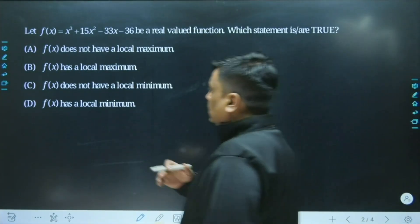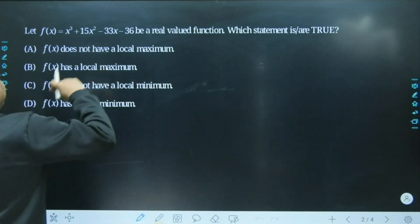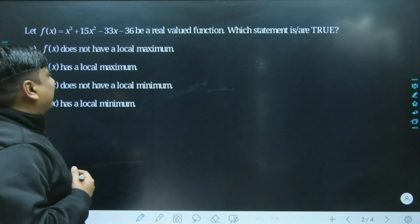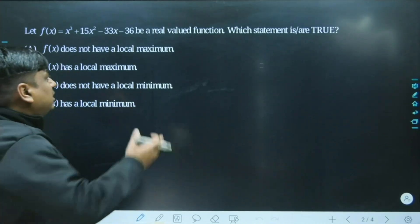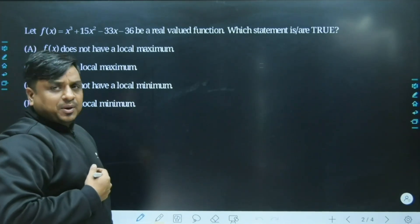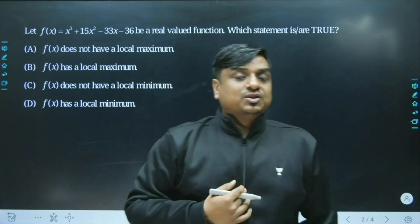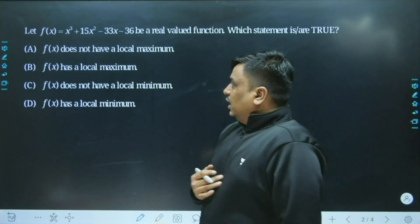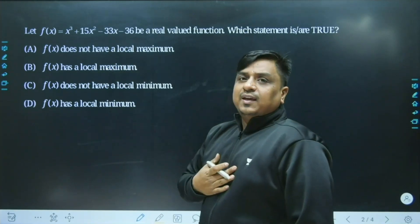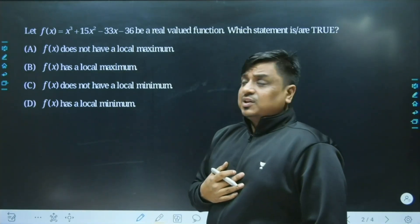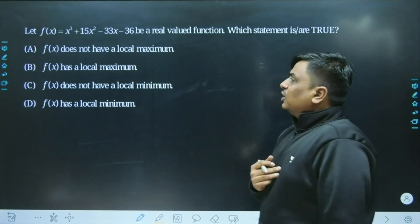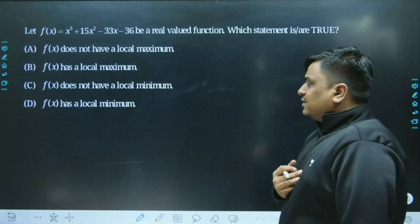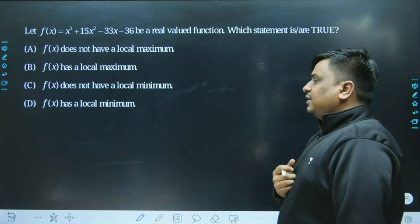Let me take the first question, which comes from the concept of maxima and minima. The problem states: f(x) = x³ + 15x² - 33x - 36 is a real-valued function. Which statement is true? Keep in mind it is an MSQ type, meaning you can have more than one correct answer. The options are: f(x) does not have a local maxima, f(x) has a local maxima, f(x) does not have a local minima, and f(x) has a local minima.